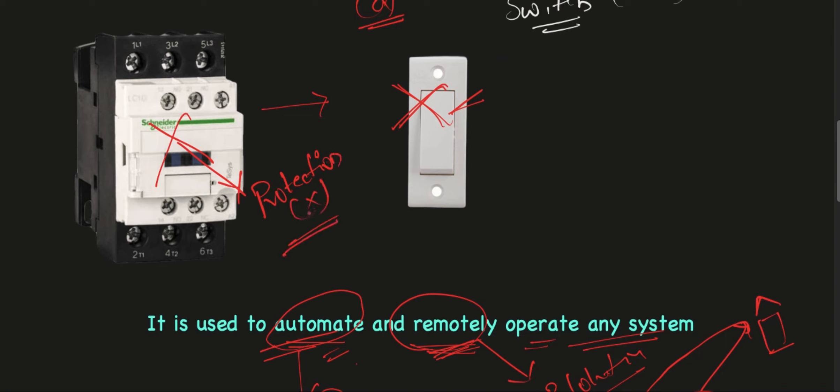Contactor does not provide any protection to the circuit, so we have to use a relay such as overload relay along with a contactor to get protection. Now let's quickly recap what we have learned in this section.